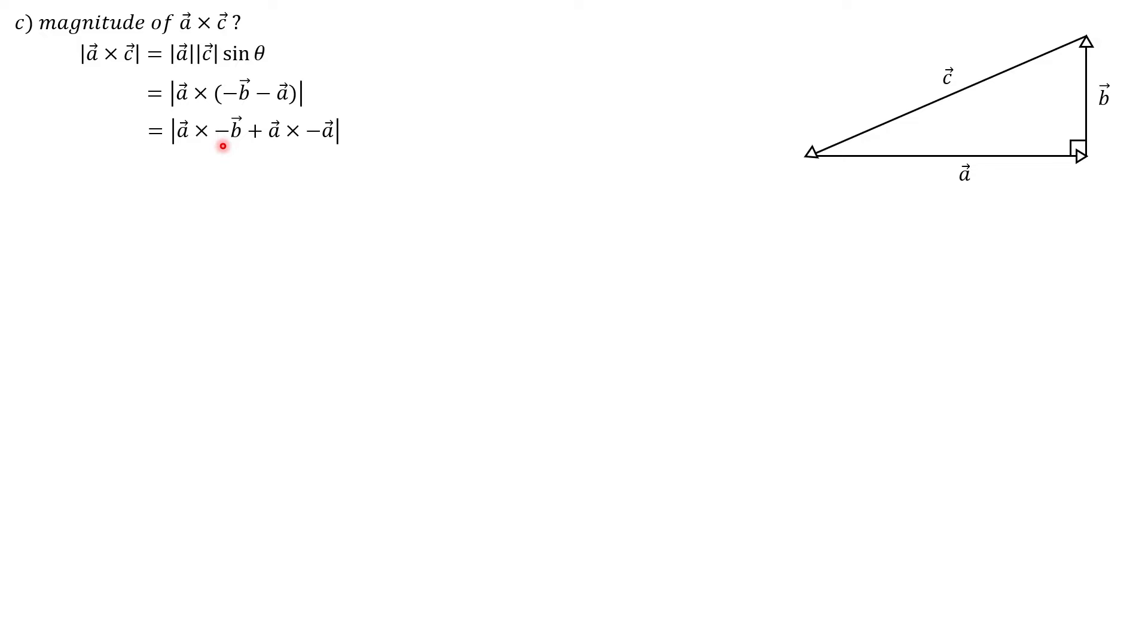Now another property of cross products allows us to take this constant right here, which is negative 1, and pull it to the outside of this cross product. So we can rewrite this as the magnitude of negative A cross B. Now A cross B we calculated in part A. We know it's 12. So that leaves us with the magnitude of negative 12, which again gives us the answer of 12. And that is the final answer to part C.